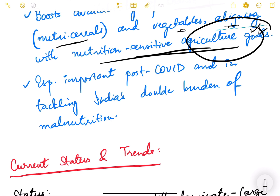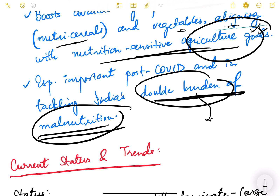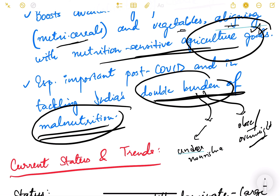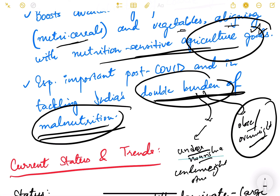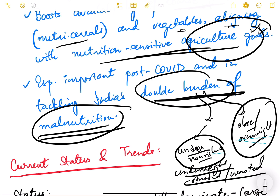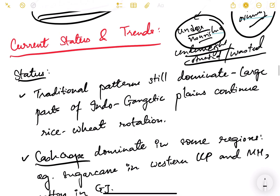This is especially important post-COVID and in tackling India's double burden of malnutrition. The double burden refers to the fact that on one hand some people are undernourished — underweight, stunted meaning less height for their age, or wasted meaning less weight for their height — and on the other hand some people are obese or overweight, which is also a form of malnutrition. This double burden of malnutrition can be addressed through crop diversification if we have sufficient policies to regulate cropping patterns.